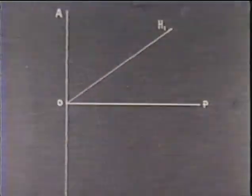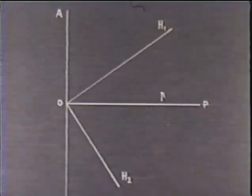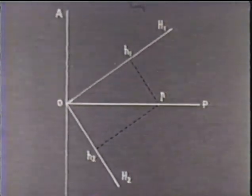Why does the crystal appear bright when the principal directions are not at extinction? We have seen that the original vibration, OP, travels in the crystal as two beams with different velocities, their amplitudes being OH1 and OH2.